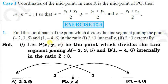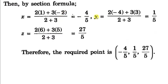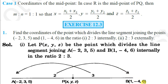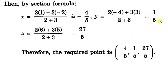Let the point P(x, y, z) divide it in the ratio 2:3. The x-coordinate will be (2×1 + 3×(-2))/(2+3) = -4/5. Similarly, the y-coordinate is (2×(-4) + 3×3)/5 = 1/5. We can find the z-coordinate similarly.